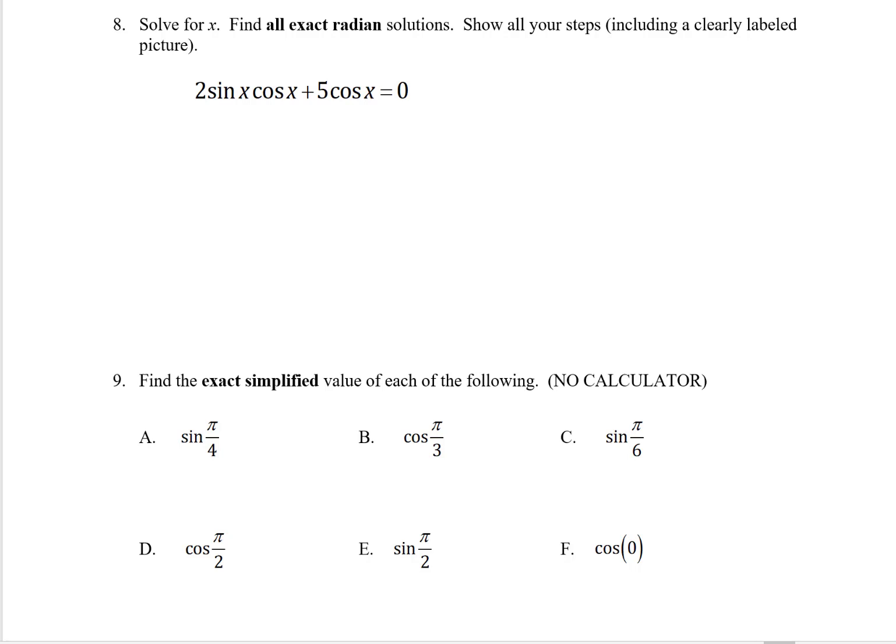Problem number 8, another equation to solve. This one is a little bit more complicated up front. Looks like I'm going to have to use some factoring here. I can see that I have a cosine x, that's a GCF here. I'll pull it out to the front, leaving me with 2 sine x plus 5.